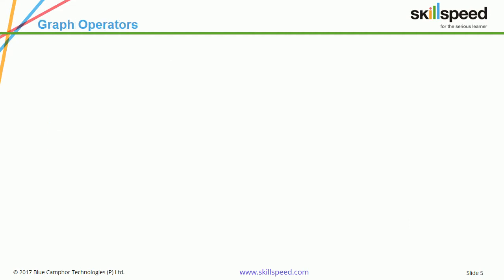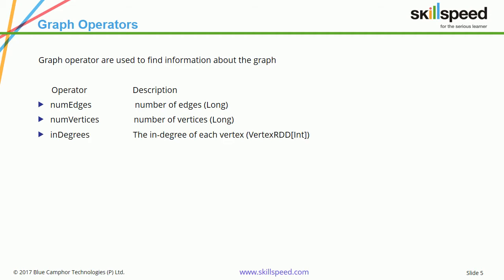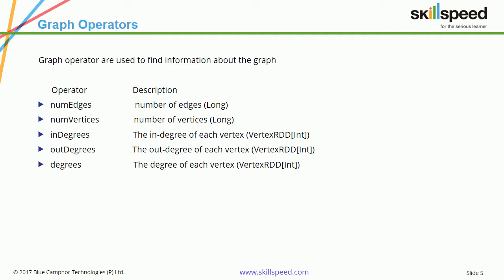Once you build a graph, as we saw in the last lesson, you can use a lot of graph-specific operators to query and build an understanding about the data. Some of the most common operators are: numEdges, which gives you the number of edges; numVertices, which displays the number of vertices; inDegrees, which shows the in-degree of each vertex; outDegree, which is the out-degree of each vertex; and the degrees operator.